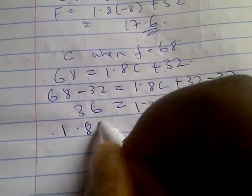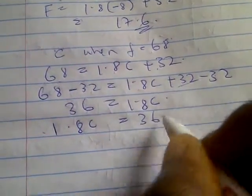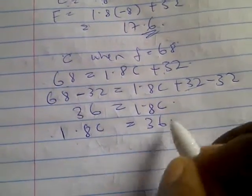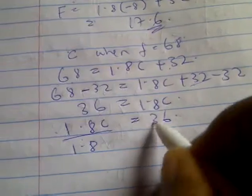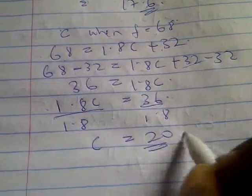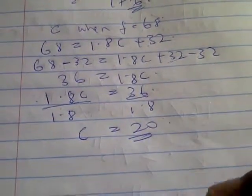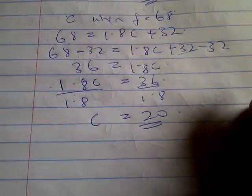Since we are looking for C, it has to be on the left-hand side. It will be 1.8C equal to 36. Now we divide both sides by 1.8 to get C. You have C to be 20. That's how you solve this kind of substitution question.